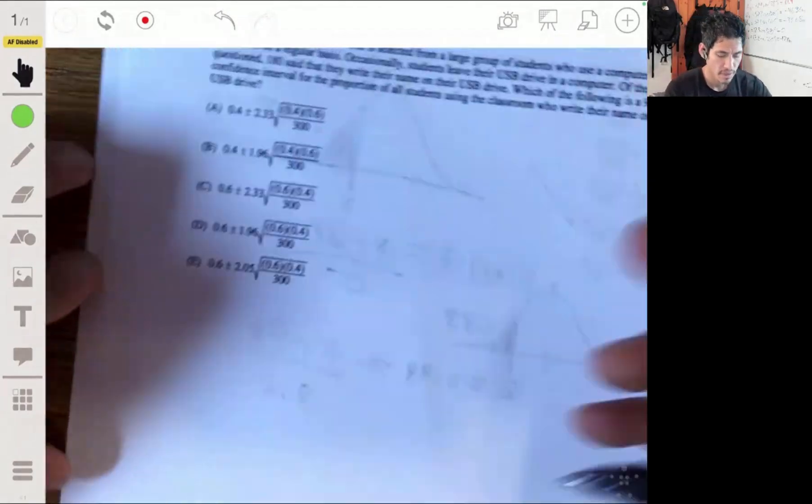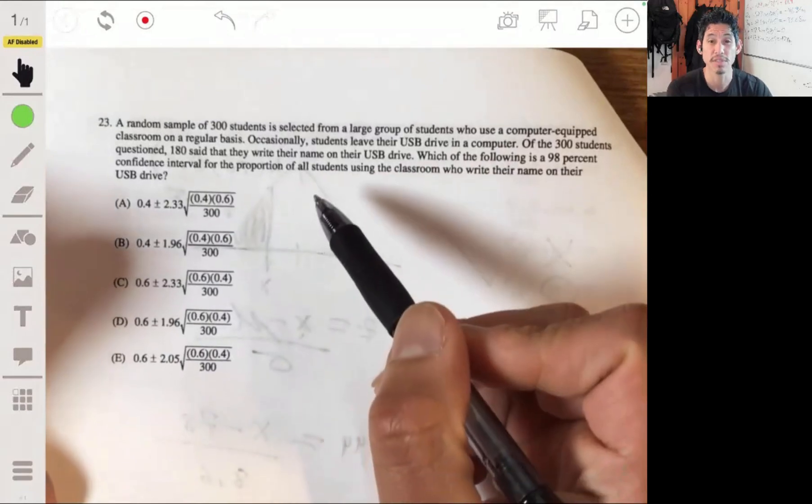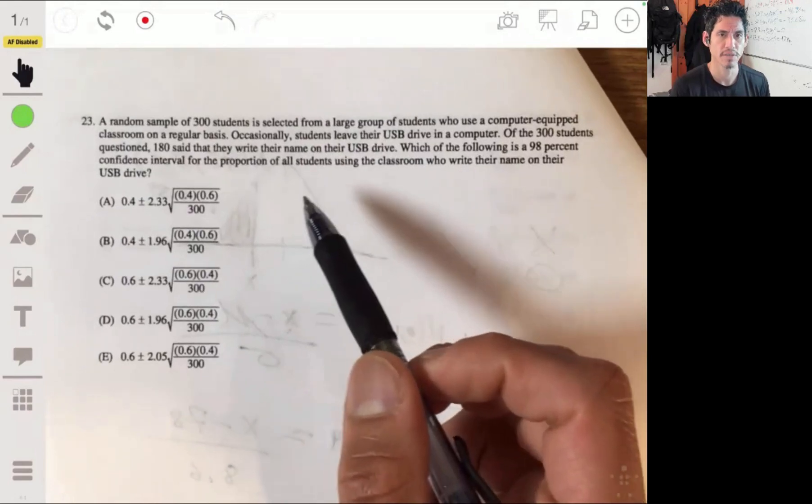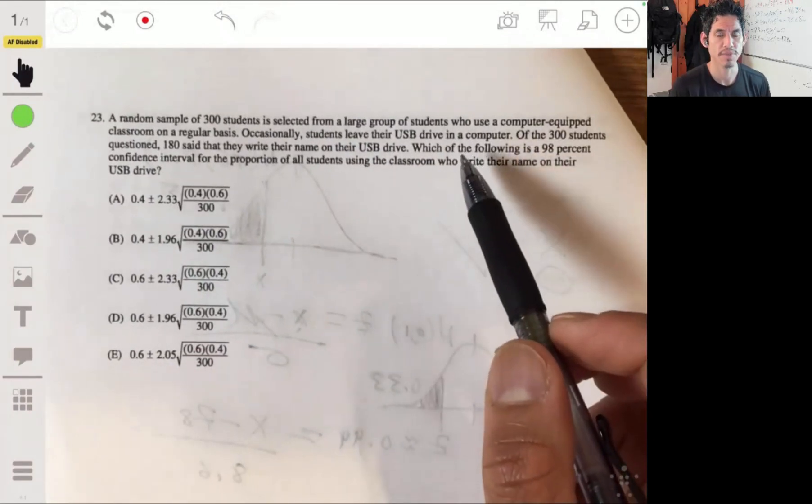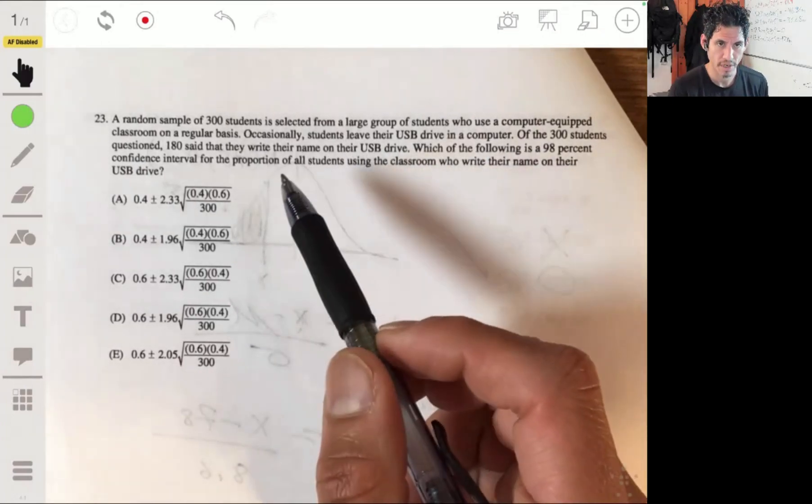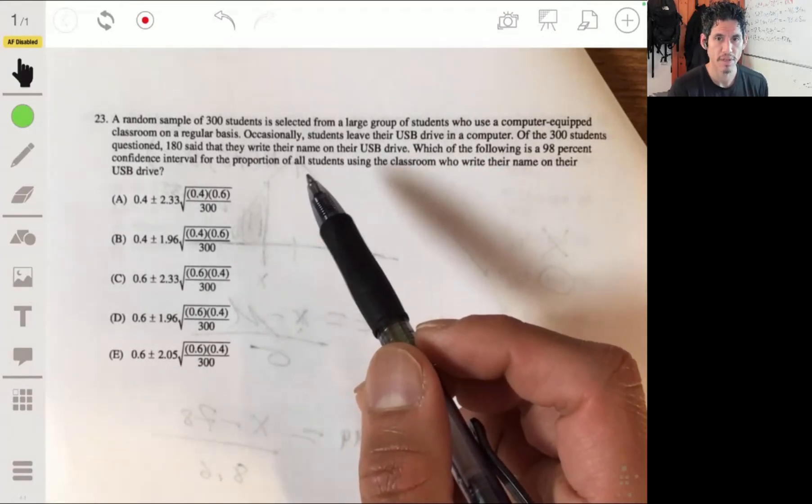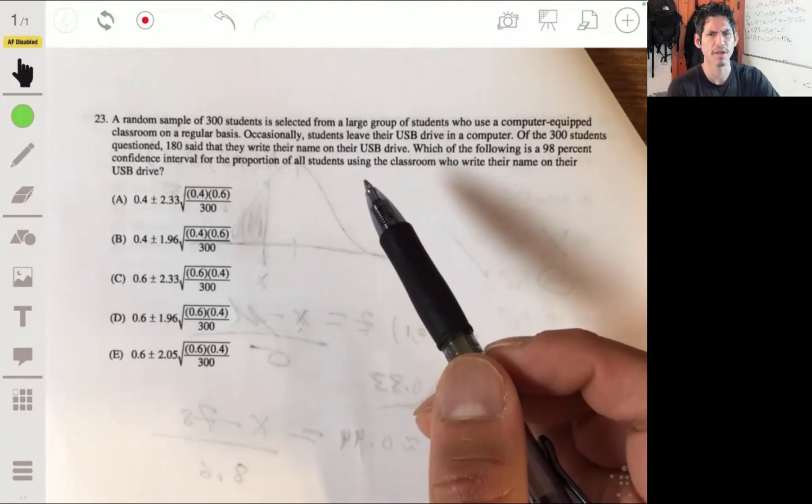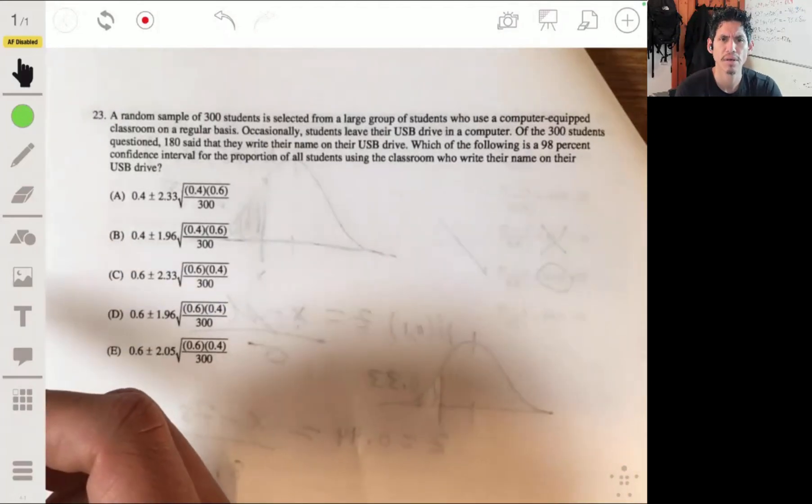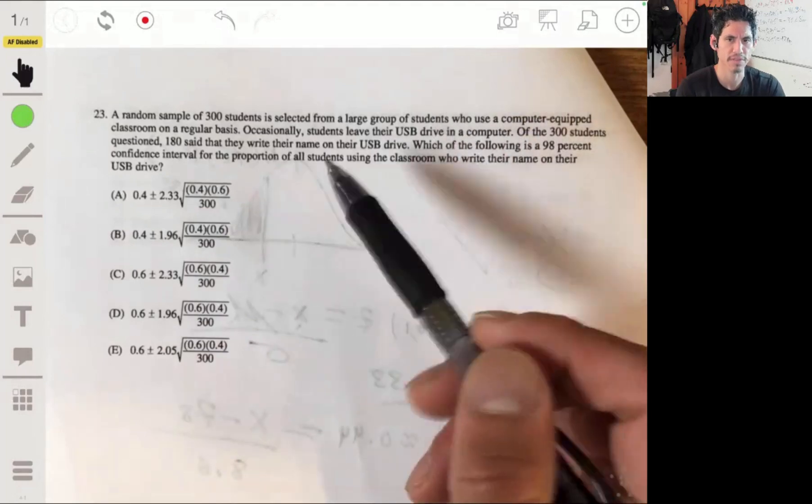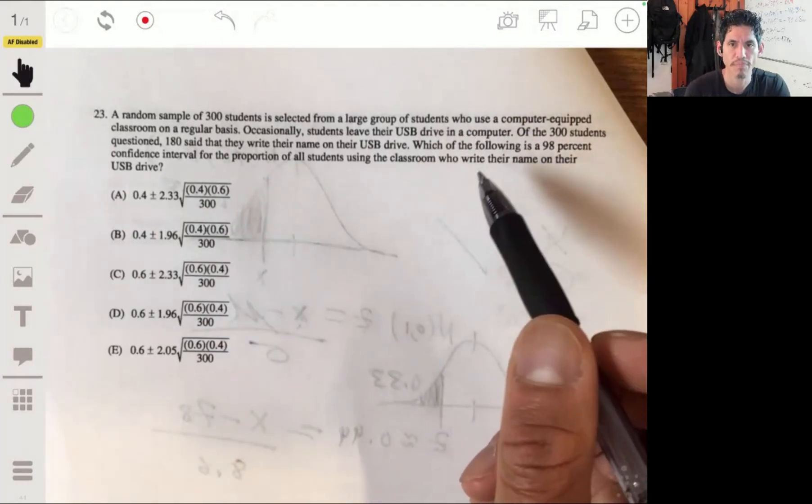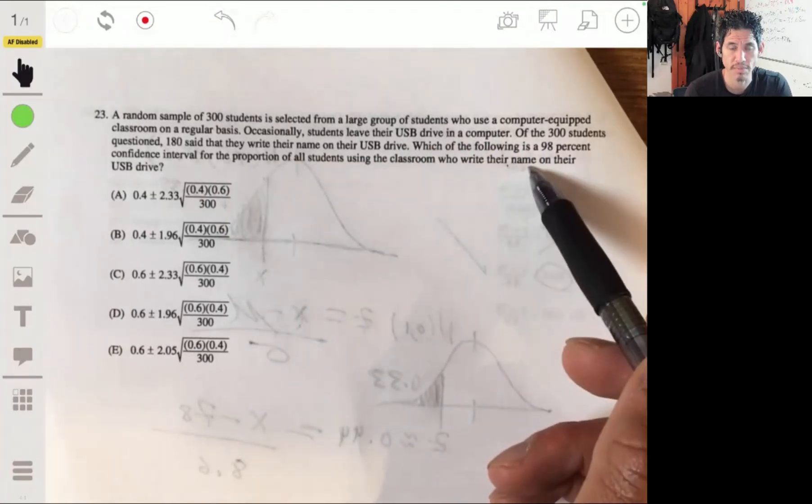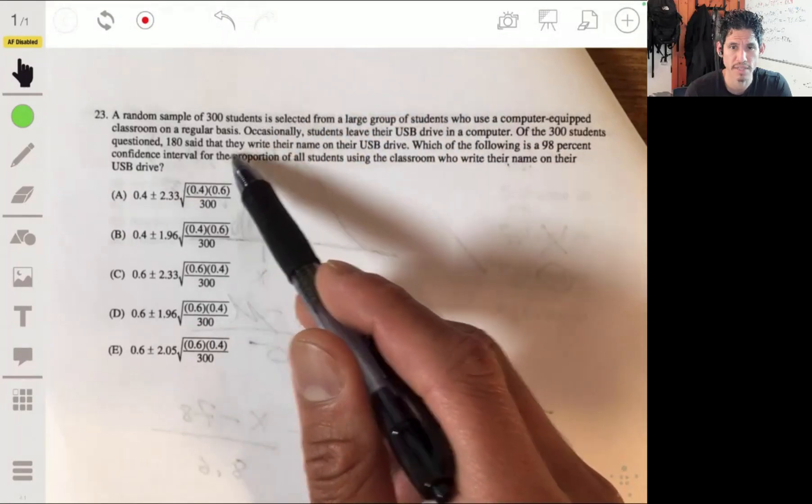We're running along to problem 23. A random sample of 300 students is selected from a large group of students who use a computer-equipped classroom on a regular basis. Occasionally, students leave their USB drive in a computer. Of the 300 students, 180 say they write their name on the USB drive. Which of the following is the 98% confidence interval for the proportion of students who write their name on their USB drive? This is kind of a weird situation, but okay.